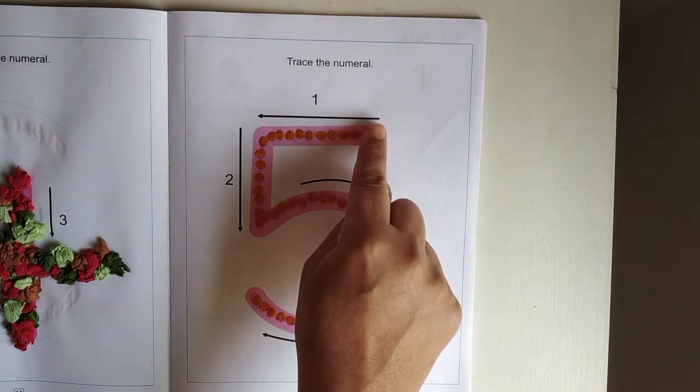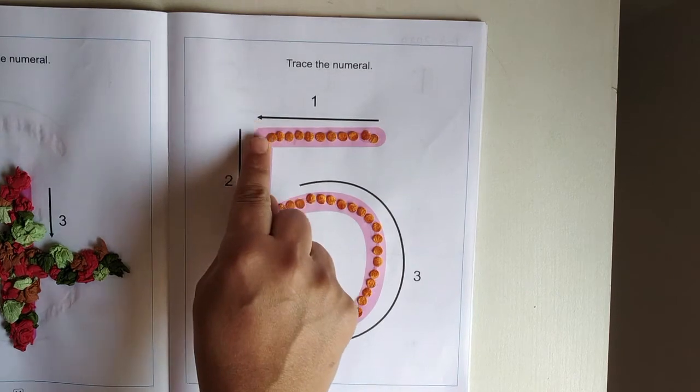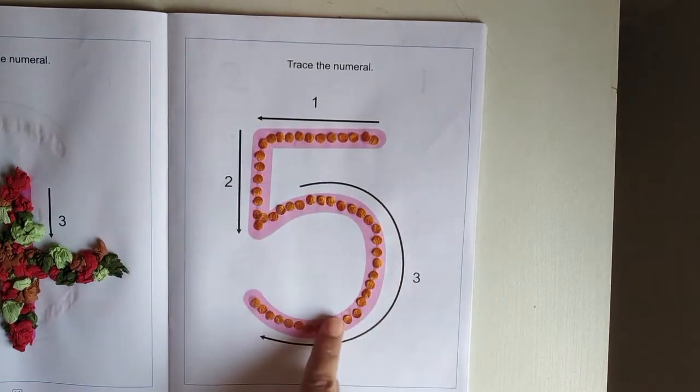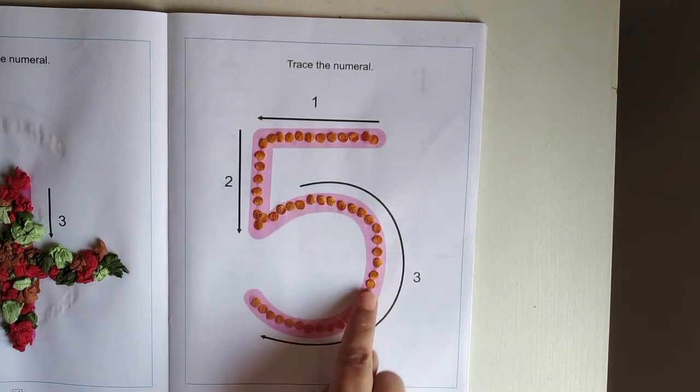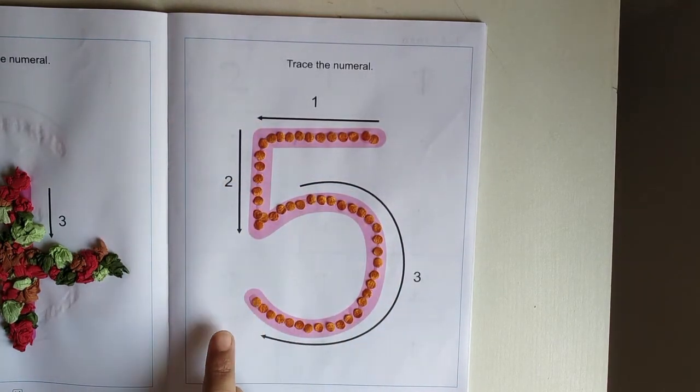Now, one more time. 5. Sleeping line, standing line, and reverse C. 5.